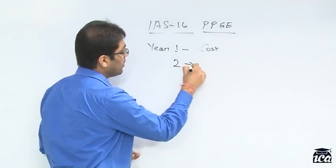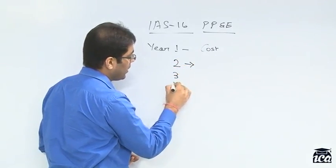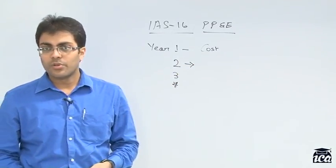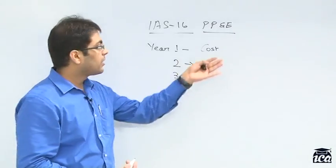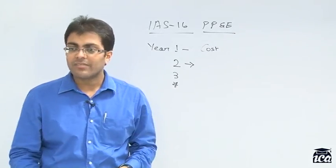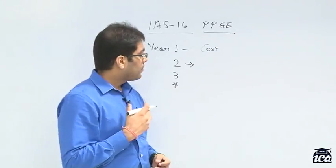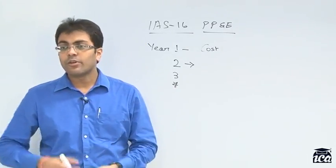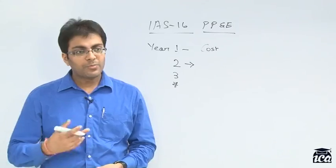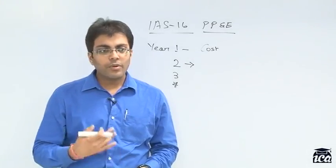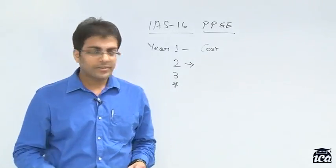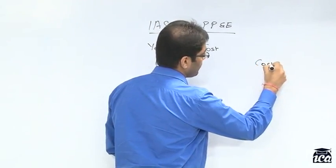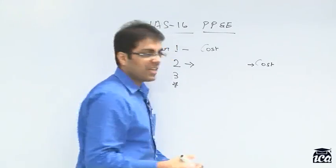So how does it appear in your books in year 2, year 3, year 4? Does it appear at cost or at some other value? Under the Indian context, we know that property, plant and equipment is measured at cost and you apply depreciation to it. So one method is the cost method, which is same as we understand.